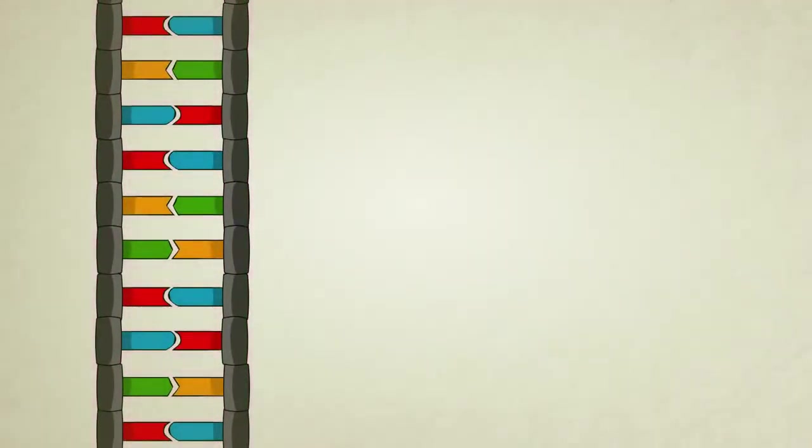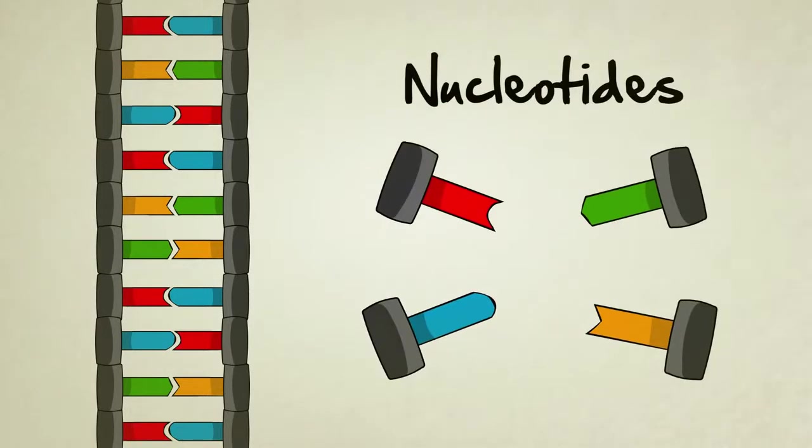A single strand is made of millions of particles called nucleotides, and these nucleotides come in four different types, which scientists have labeled A, C, T, and G.